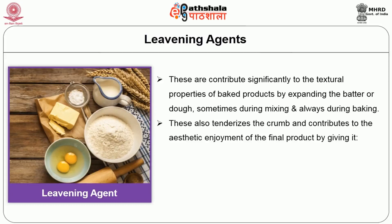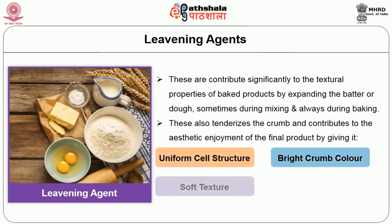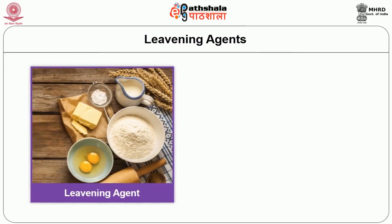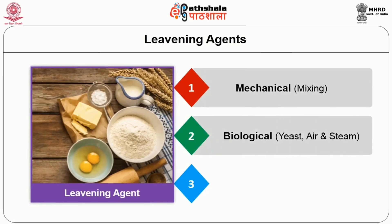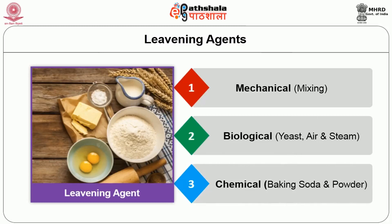Leavening agents also tenderize the crumb and contribute to the aesthetic enjoyment of the final product by giving it uniform cell structure, bright crumb color, soft texture, and enhanced palatability. There are three types of leavening agents: mechanical (mixing), biological (yeast, air, and steam), and chemical leavening agents (baking soda and baking powder).